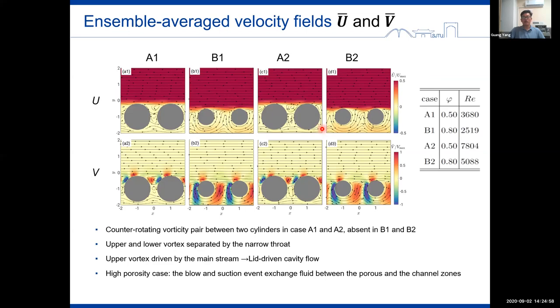The ensemble average velocity fields near the interface are shown in this figure. A pair of counter-rotating vortices can be found between two cylinders in the low porosity cases A1 and A2. While this is absent in the high porosity cases. In A1 and A2, the upper vortex is driven by the mainstream velocity, which is like a lid-driven cavity flow. And the upper and lower vortex are separated by the narrow throat. For the higher porosity cases B1 and B2, the blow and suction events strongly exchange the fluids in the vertical direction, as can be seen clearly from the distribution of the vertical velocities.